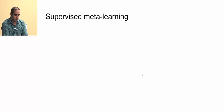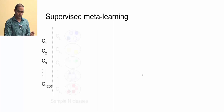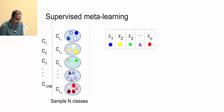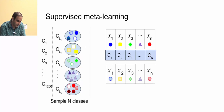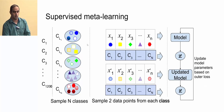To visualize one iteration of meta-learning on one task: suppose we have a dataset with 1,200 different classes. We randomly sample N different classes, pick one example from each for the train set, and pick another example from each class for the validation set. So we sample two data points per class and apply the meta-learning algorithm.